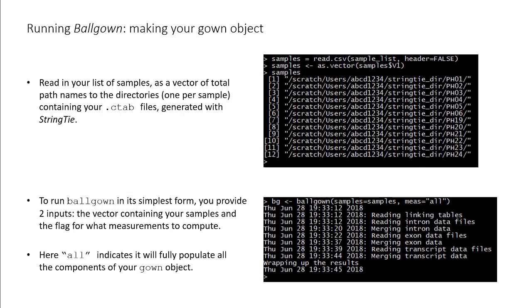Here, all indicates that the ballgown function will populate all the components of the gown object. The function processes the linking tables, intron data, exon data, and transcript data.